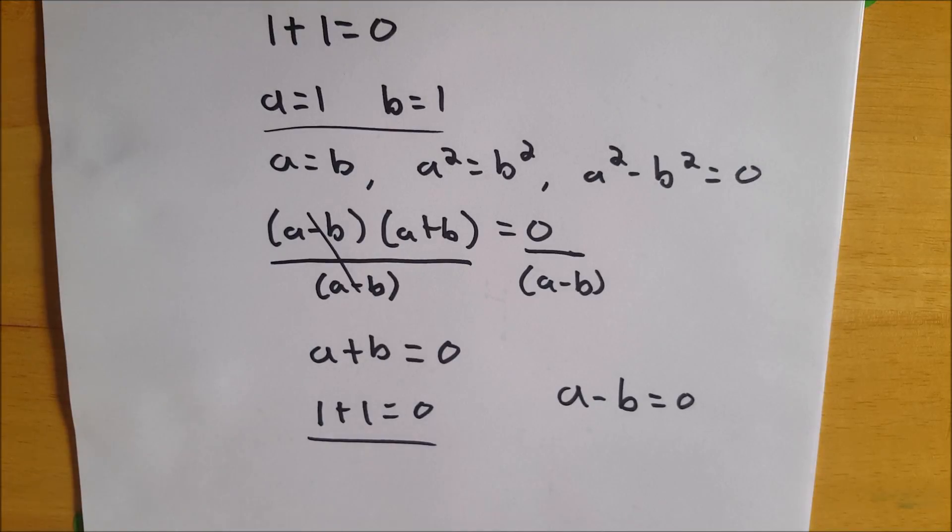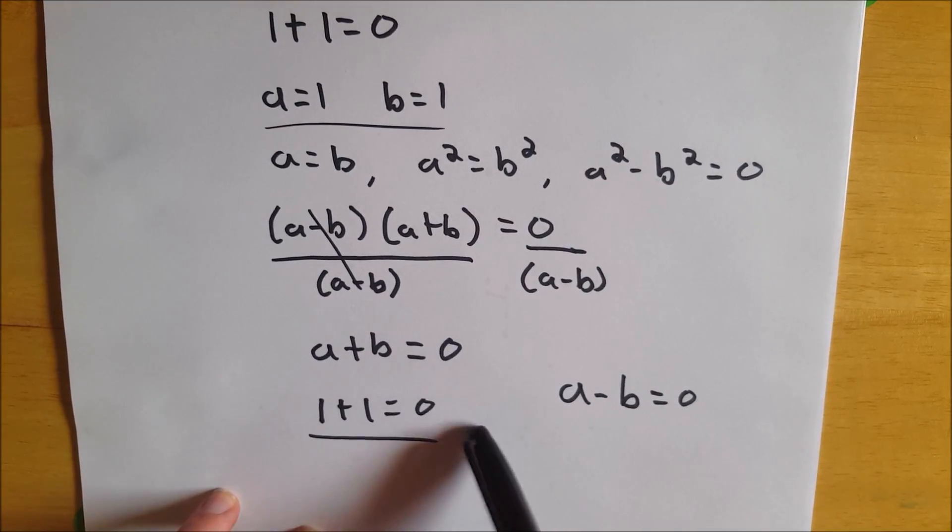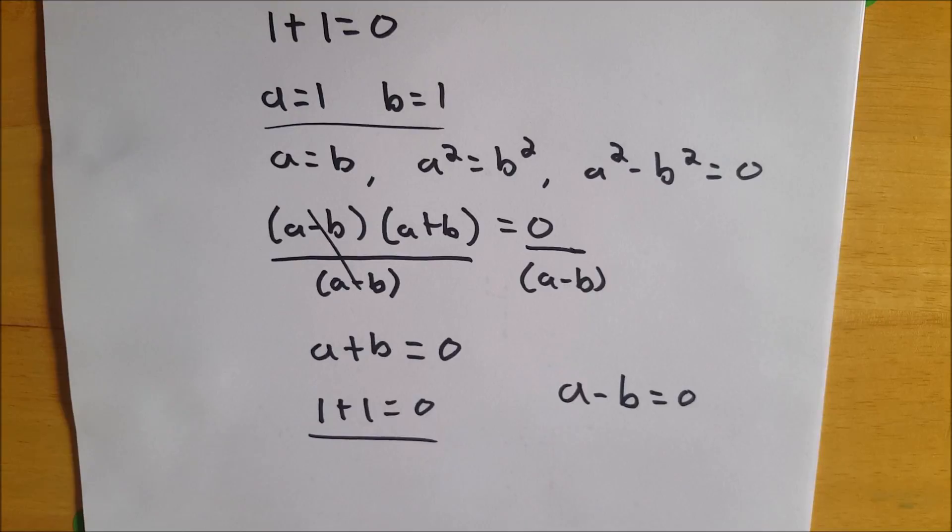It proves that Winston Churchill is, in fact, a carrot. So, of course, you could prove anything in the world if you were allowed to divide by 0. Once you get to such a ridiculous result as 0 equals 1 plus 1, it's over.